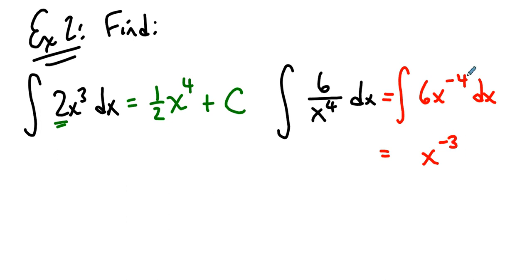Because then you decrease the power by 1, you end up here. So this negative 3 is going to have to multiply by something to give you 6, and that something is negative 2. And then we say plus a constant.